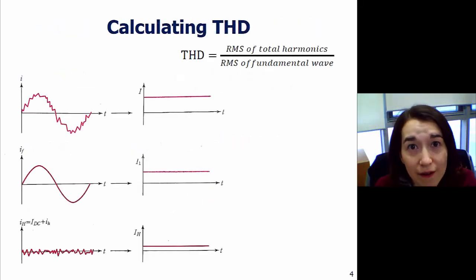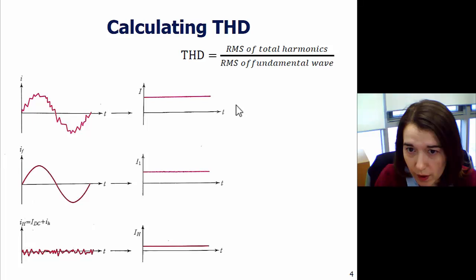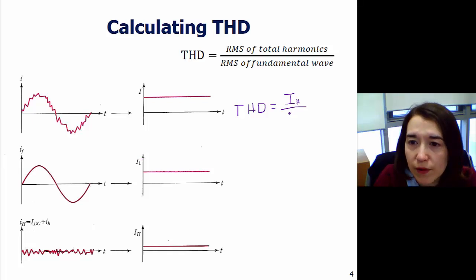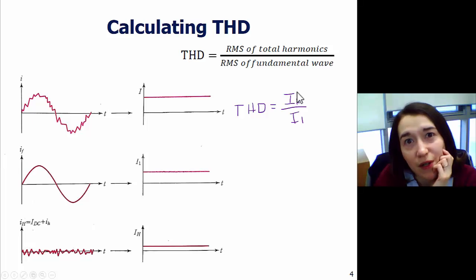Now we can apply the definition of THD to these signals using the RMS values. First let's start with the direct definition. THD is the RMS value of the total harmonics, which is IH here, divided by the RMS value of the fundamental, which is I1. We can plug these values in. Say it's not easy to get IH. What else can we do?